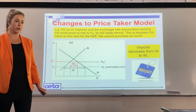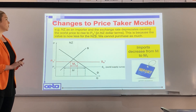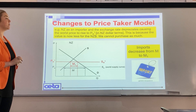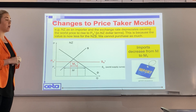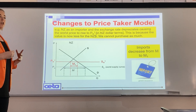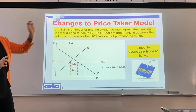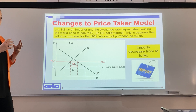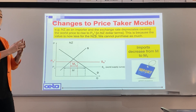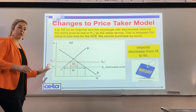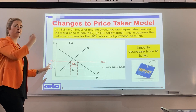The next change shown on this model is a change in the world price. For example, New Zealand as an importer where the exchange rate depreciates causes the world price to rise to PW1. This is because the value of the New Zealand dollar is now less, so we can't purchase as much — one New Zealand dollar is worth less than the other currency. Therefore the world price goes up because we need more New Zealand dollars to buy those goods.